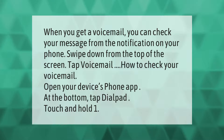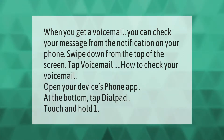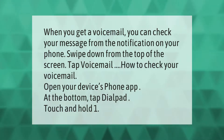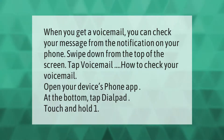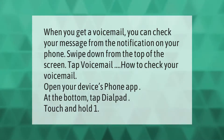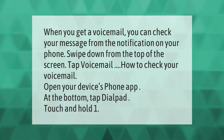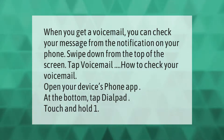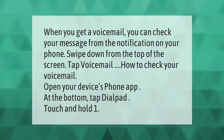When you get a voicemail, you can check your message from the notification on your phone. Swipe down from the top of the screen and tap voicemail. To check your voicemail manually, open your device's phone app, tap the dial pad at the bottom, then touch and hold one.